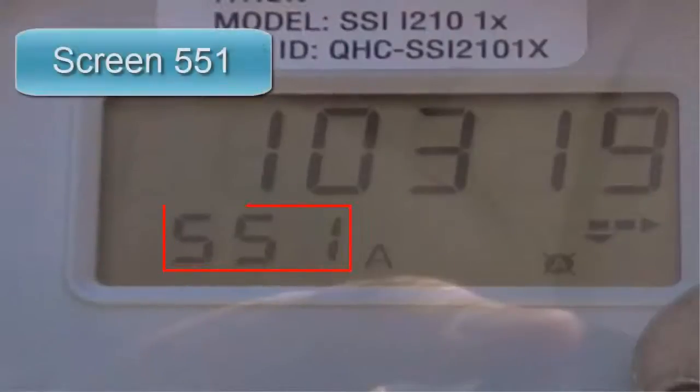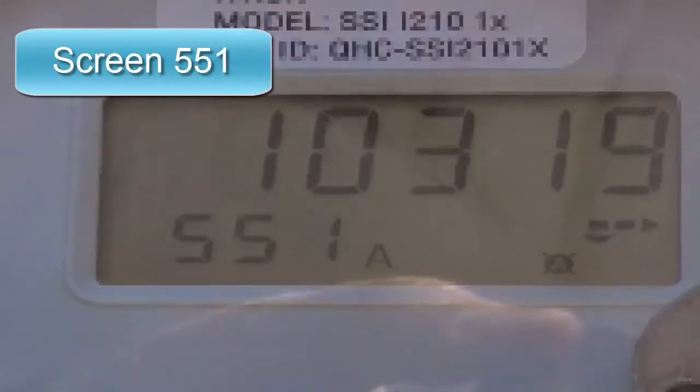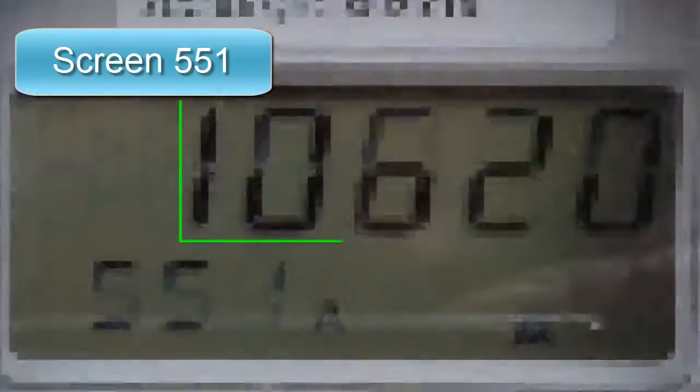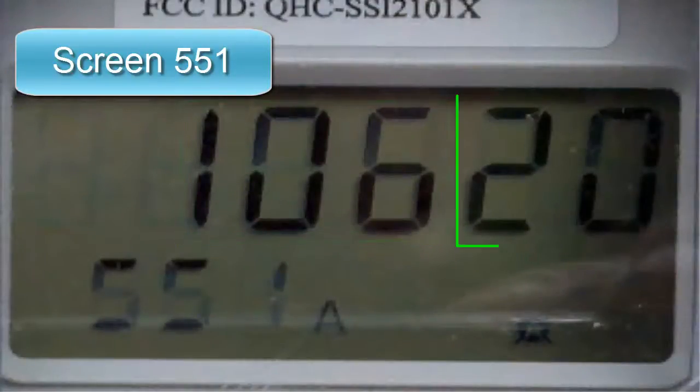Screen 551 or SSI will indicate connectivity. It will show busy while it is searching for the network. When you start to see 106 followed by two numbers, 106XX, this indicates the setup is done.